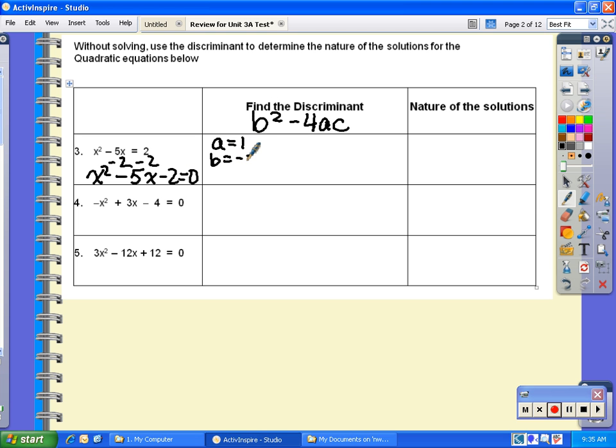To evaluate b² - 4ac, I'm going to plug in (-5)² - 4 times a times c. (-5)² is 25 minus (-4 times 1 times -2), which is actually plus 8. So 25 + 8 equals 33. Since my discriminant is positive, I know that the nature of my solution is two real solutions.